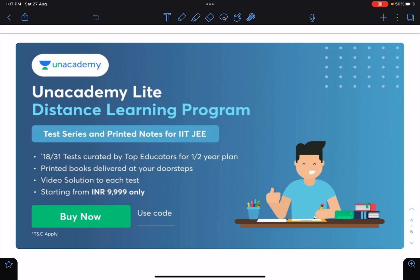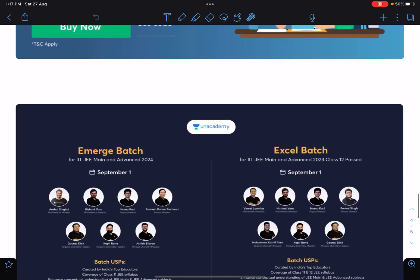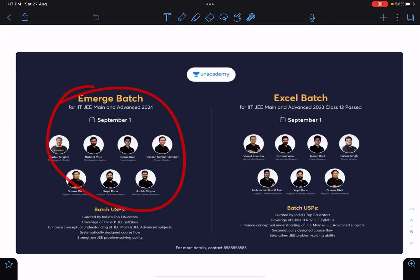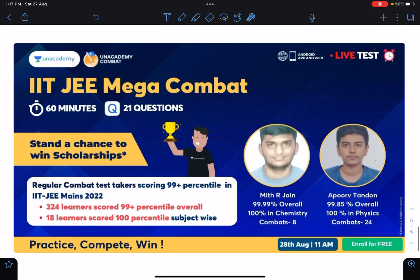You can use my code Nitin sir in order to connect with me on Unacademy. These are some batches which will be starting on September 1st. This is the Emerge batch for 2024 and this 2023 12th pass batch, and this IIT JEE mega combat.